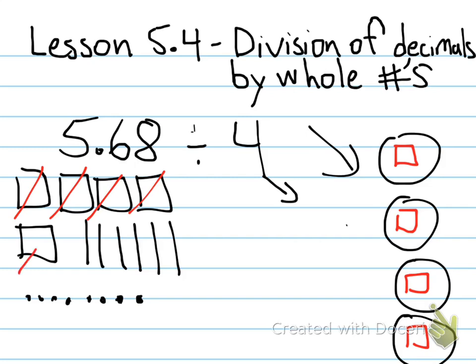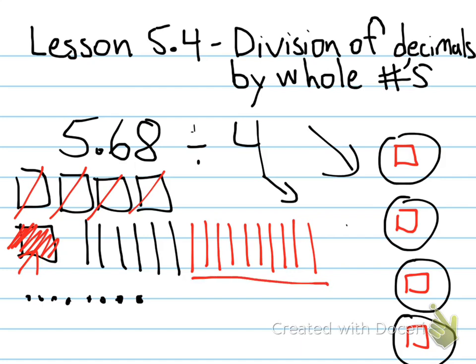Since I can't take this hole and divide it equally into the 4 groups, I'm going to regroup that hole and convert it to 10 tenths. Now that I have 10 tenths from the one hole that I regrouped, and I have the 6 tenths from the original part of the problem, I have 16 total tenths that I would have to divide into these 4 groups. As a result, I would be able to put 4 tenths in each group.